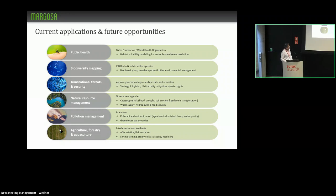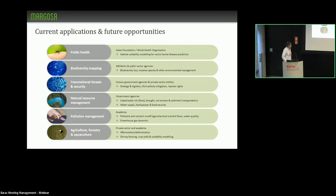We're also running an exercise with IGB Berlin in an academic capacity on biodiversity mapping, concerning biodiversity loss and invasive species modeling, with applications for other environmental management. We're also developing applications with various government agencies in transnational threats, security, and stabilization — involving military strategy and logistics, monitoring and mitigation of illicit activity, and riparian rights. And of course, there's the catastrophe risk I mentioned earlier: flood, drought, and soil erosion dynamics.